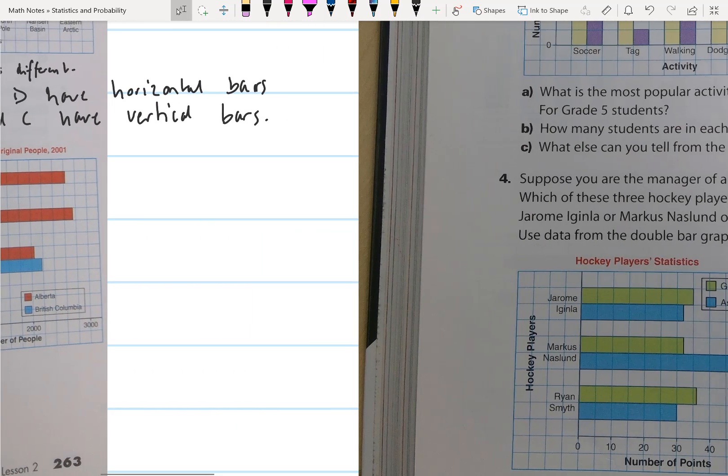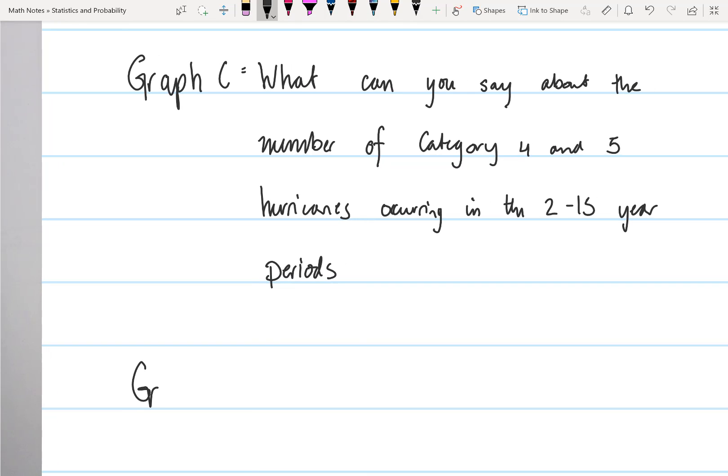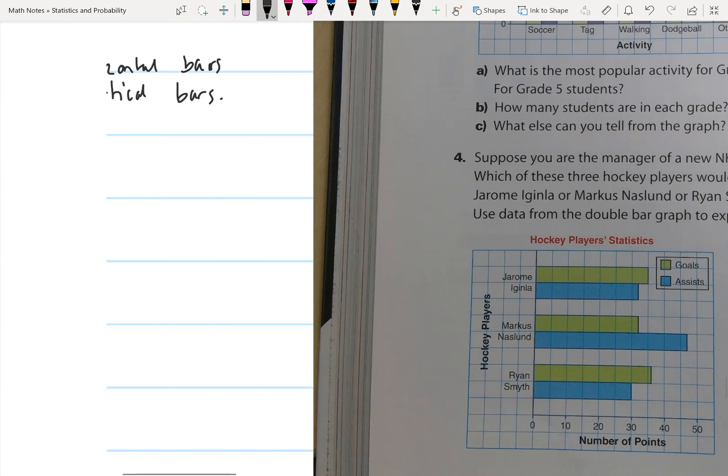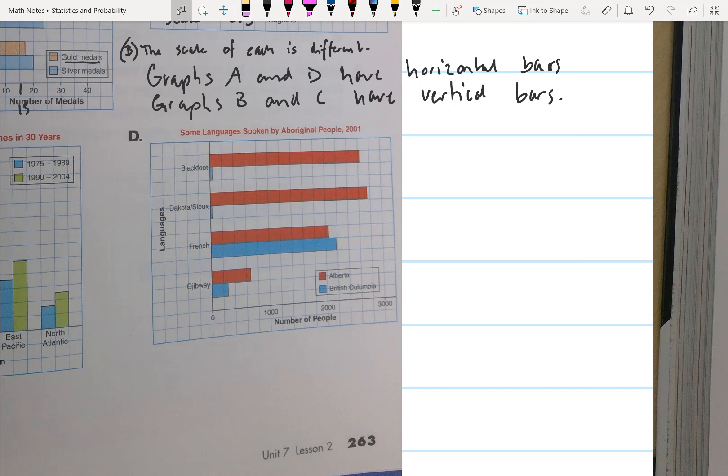The question I could ask is about languages spoken, a comparison between Alberta and British Columbia with aboriginals speaking other languages. We could say which province has more French spoken? Well, French is spoken by more people in British Columbia than in Alberta.